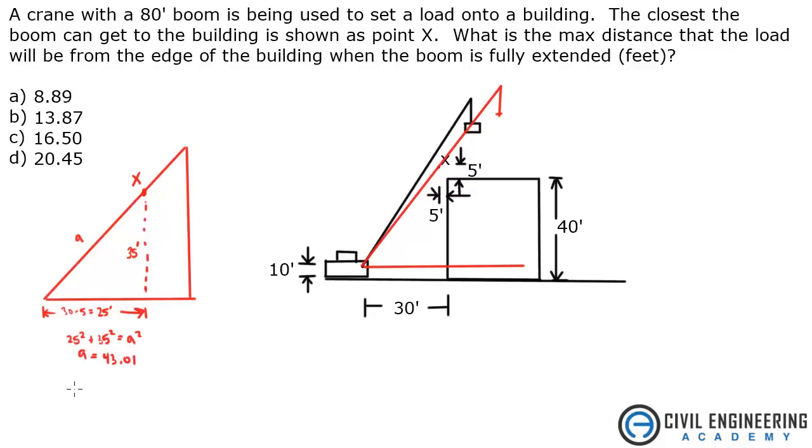With the boom fully extended, you can take 80 minus 43.01. And that will give you the distance past X, which is 36.99 feet.